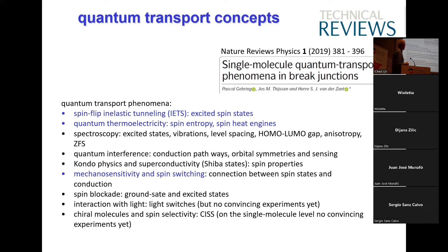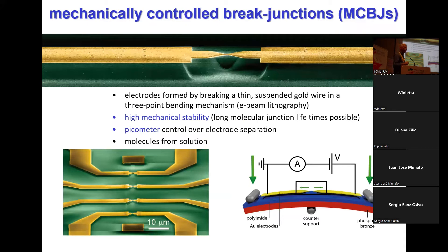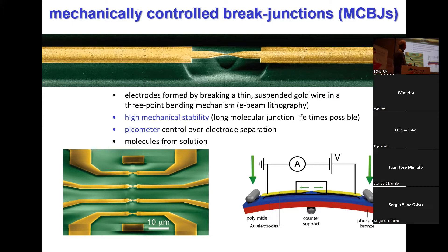I'll start with the mechanical break junctions. You really have to go to a clean room and make a gold wire. You make a very tiny wire in the middle and then suspend everything. If you put it in a three-point bending system — pushing from below and with a counter support — you can bend a flexible substrate, and it will break at the weakest point, which is that suspended wire. There is some scalability — we can easily make four, 20, or 30 on the same chip. The problem is just having all the wires down. Already four is more than enough to measure for weeks.